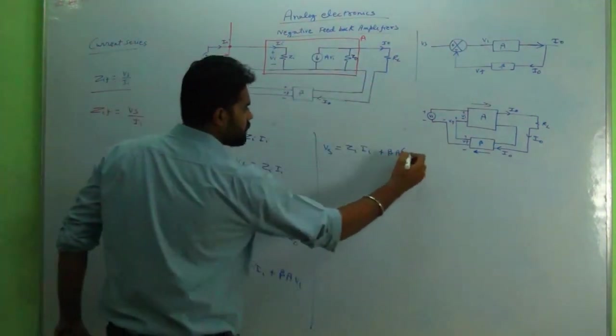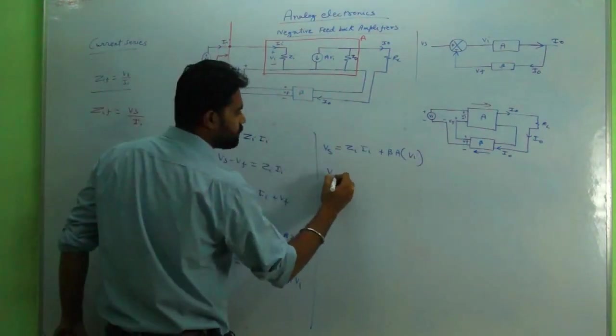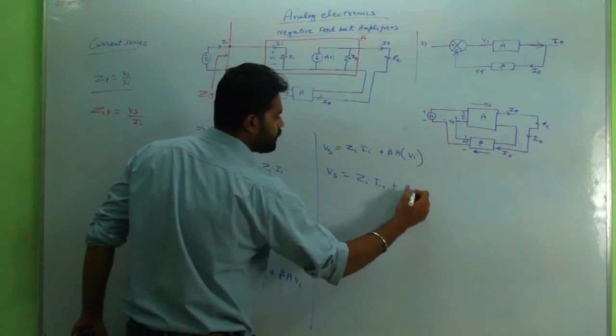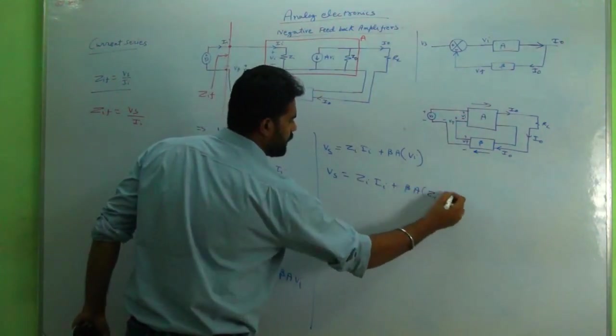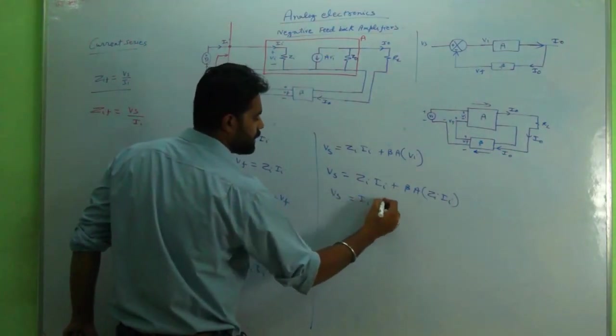So vi I will replace it by ziii. So vs equals ziii plus beta into a into ziii.